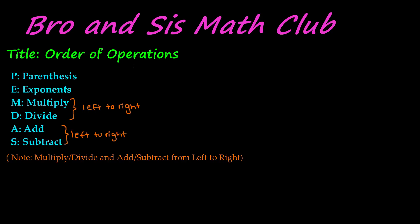Now remember to follow this in the exact same order. According to PEMDAS, parentheses comes first and then so on. Keep in mind that multiplication and division go together, and addition and subtraction go together. So whenever you're solving, we have to go from left to right for these two groups. For example, if multiplication comes first, we'll do multiplication first from left to right. And in the same way, if subtraction comes first in addition and subtraction, we'll do subtraction first from left to right.